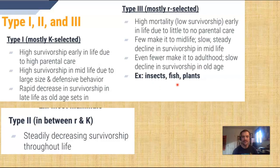Even fewer make it to adulthood, and there's a slow decline in survivorship in old age — so insects, fish, and plants. Once they do make it to middle age, there's a slow decline toward old age; they can survive for a while. But the biggest thing is almost all of them don't make it to be older. Type 1 is K selected, and Type 3 is R selected.